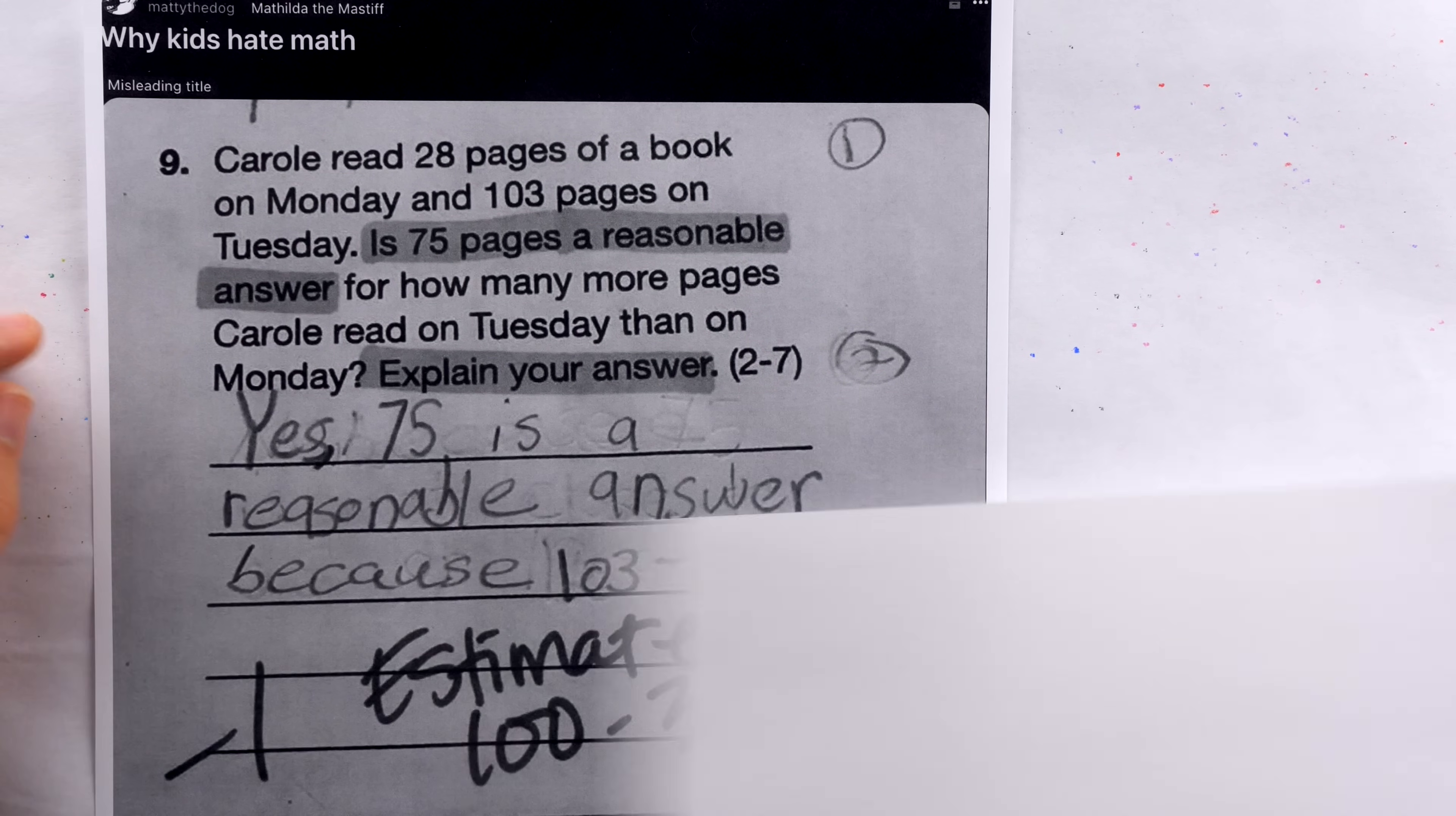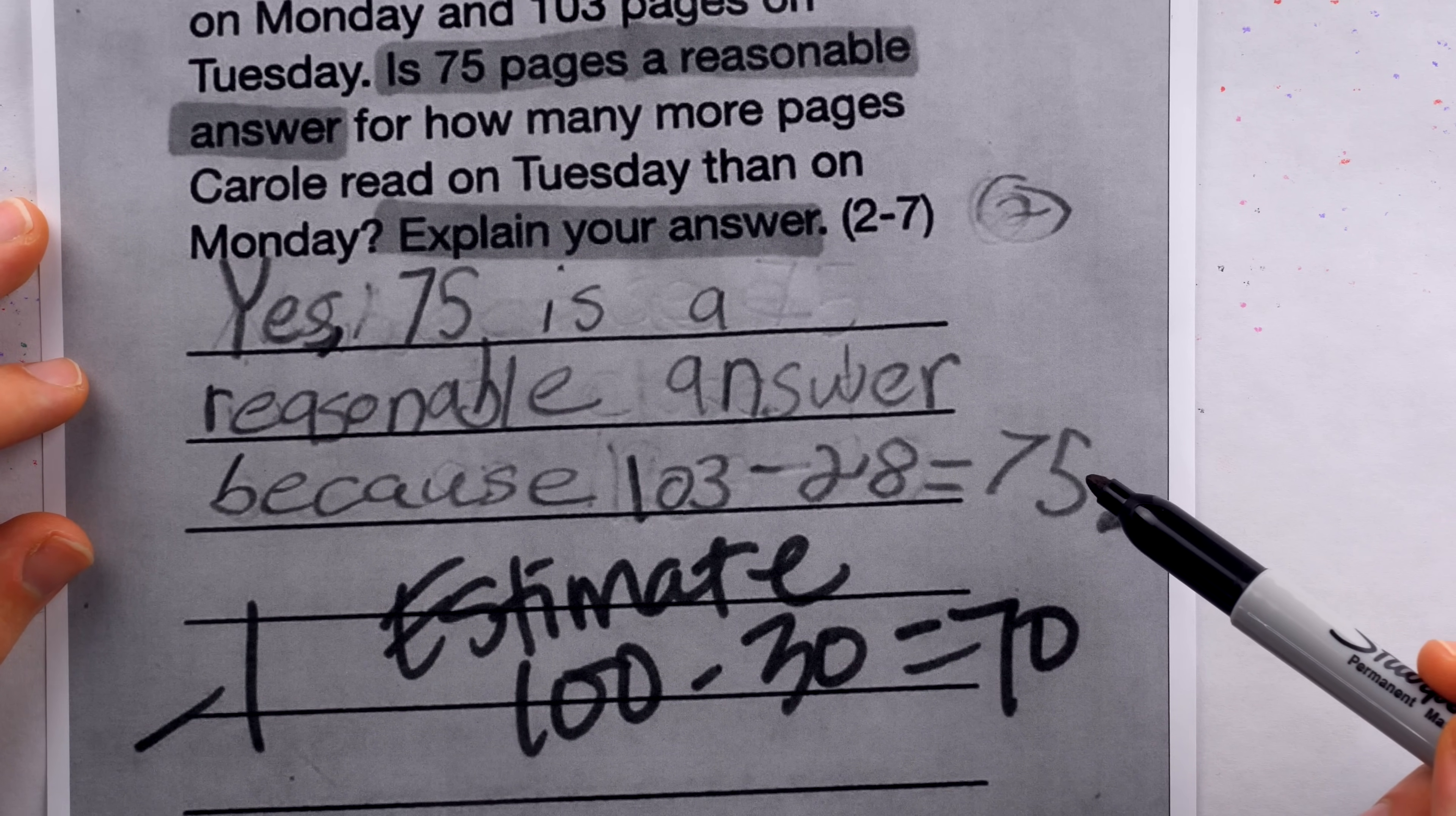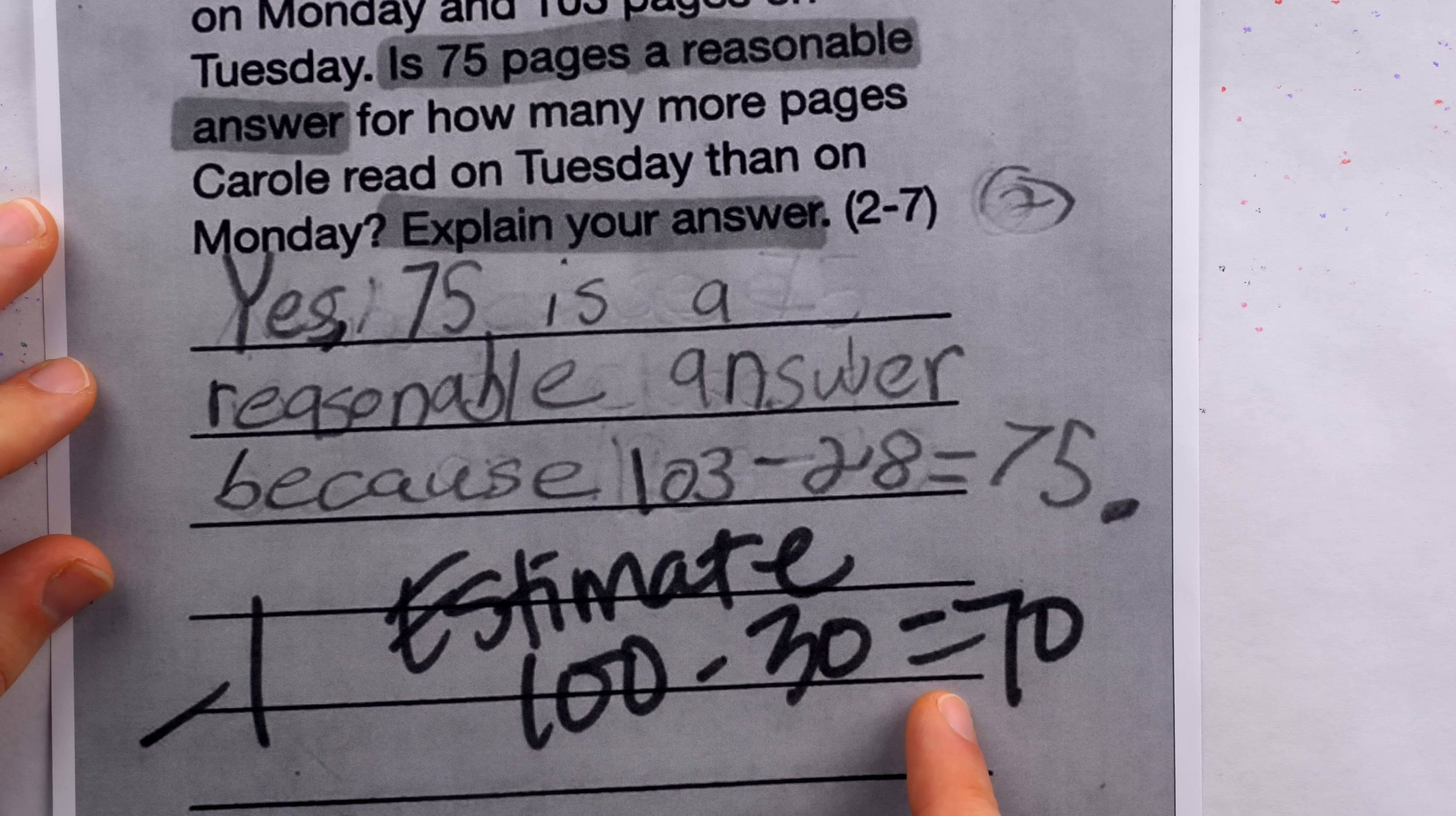Well, let's take a look at our protagonist's solution. Yes, 75 is a reasonable answer because 103 minus 28 equals 75. That makes sense. But then you see they lost a point. The teacher says, no, no, no, no, no, no. That's not fully correct. You're supposed to estimate 100 minus 30 is 70.